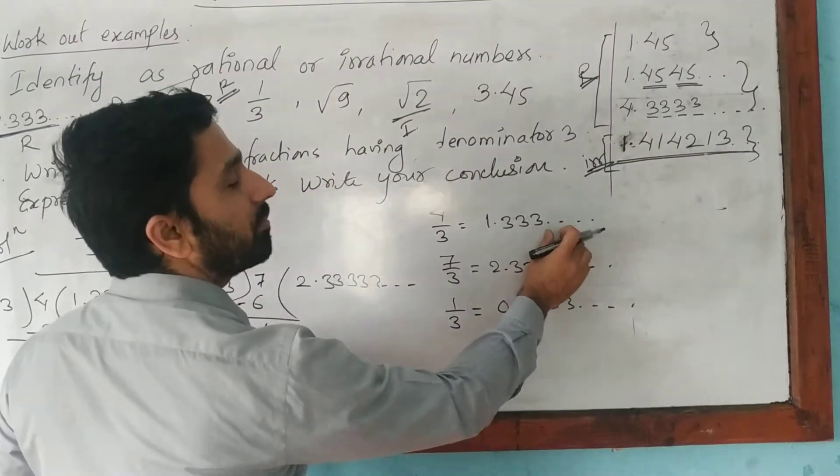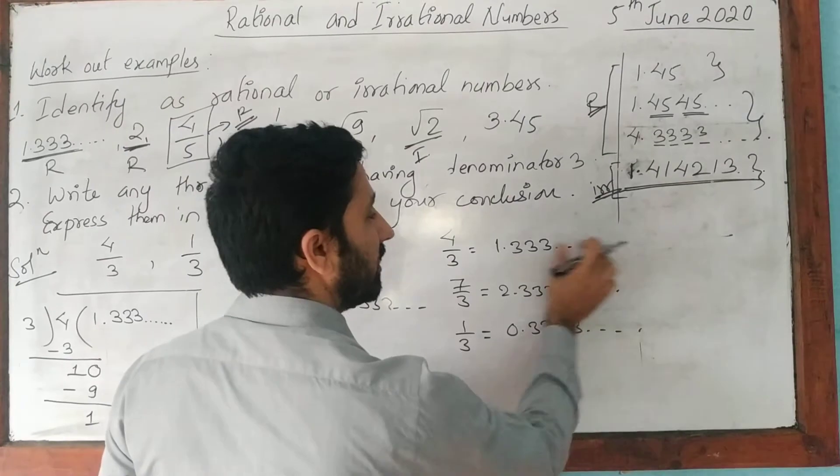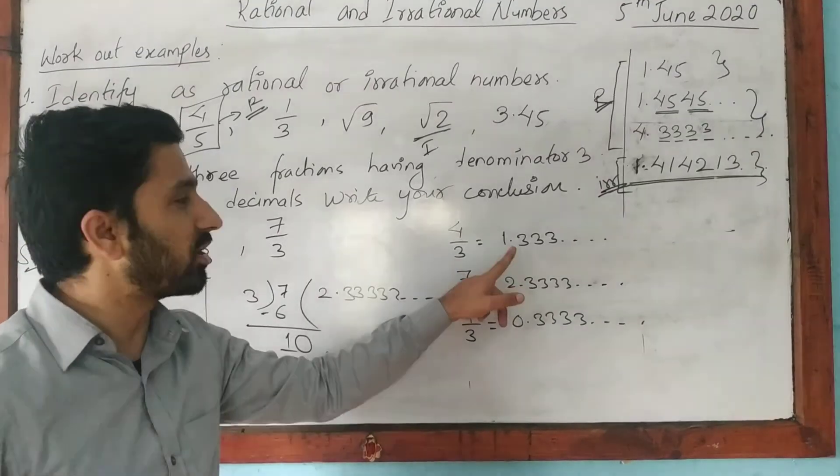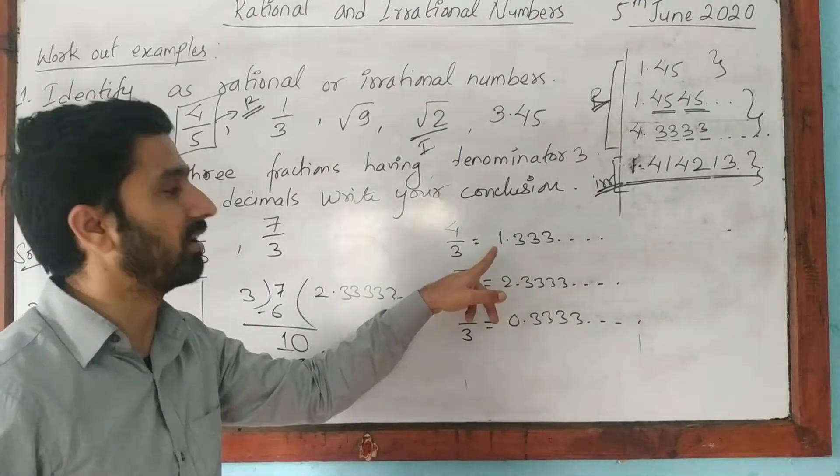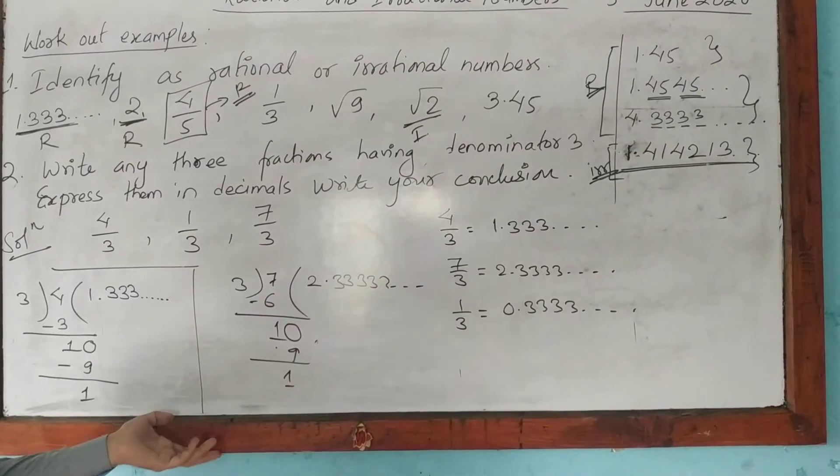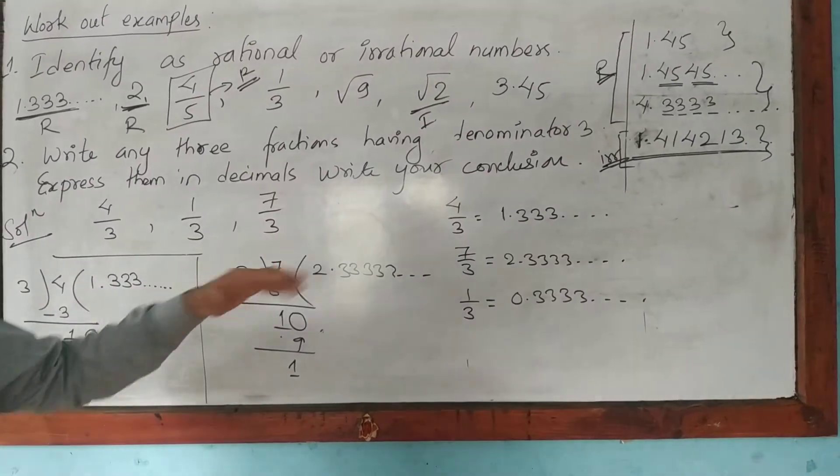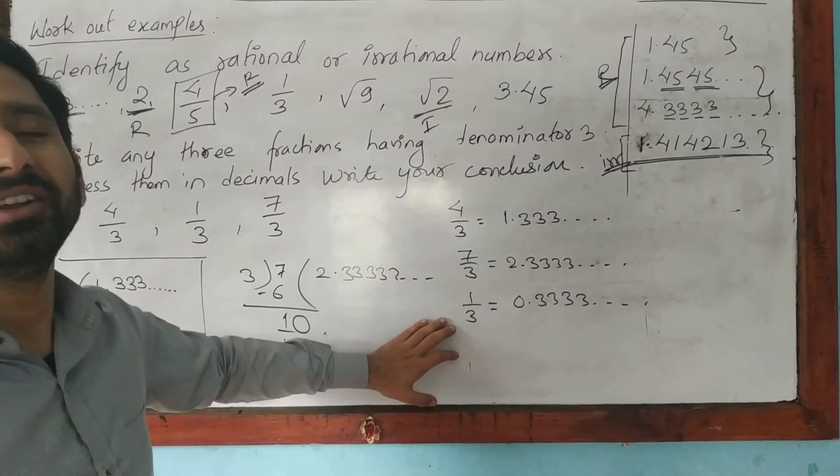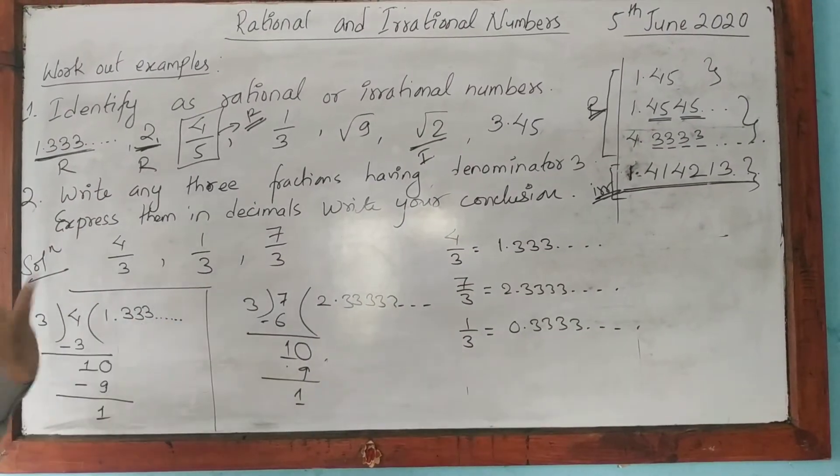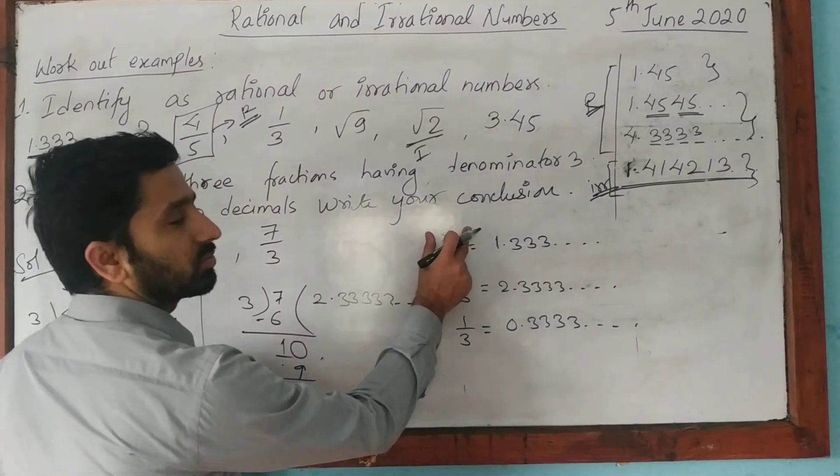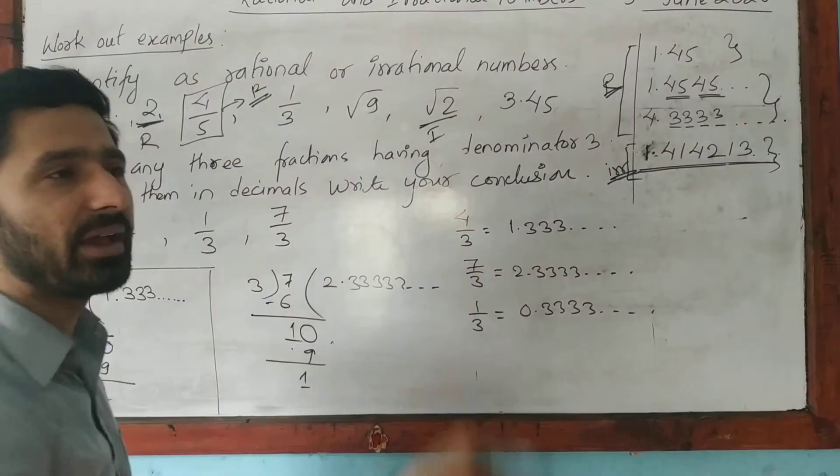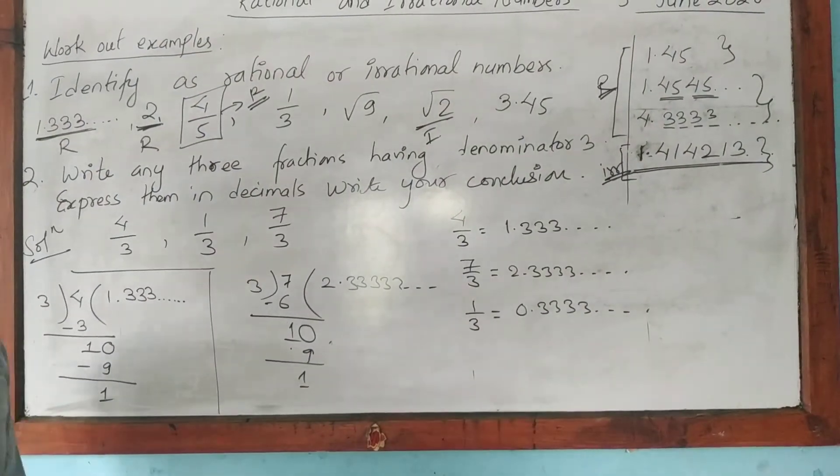3 is repeating every time. 3, 3, 3, 3, 3, 3 in all cases. That means these decimals, they are non-terminating but recurring. That means what conclusion can we write is, the decimals are non-terminating but recurring decimals. That is, these numbers are rational numbers. Now the final conclusion will be, any integers when divided by 3 will be a rational number. Why? Because the decimal will be recurring but non-terminating decimals.